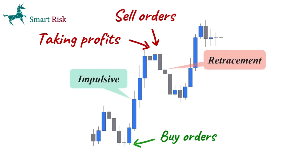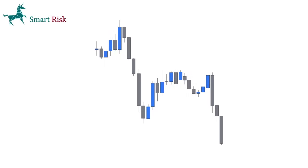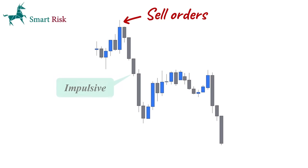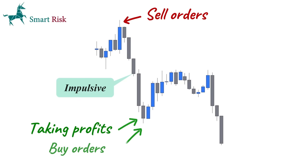On the contrary, when market sentiment is bearish and investors are pessimistic about a currency pair, they tend to sell it, which leads to an impulsive move in the opposite direction. As the price falls, some traders may start to feel that the currency is becoming oversold and decide to buy it back, which can again trigger a retracement.